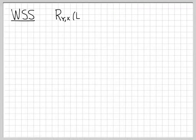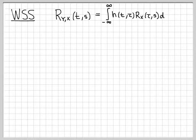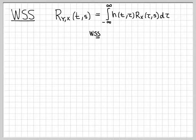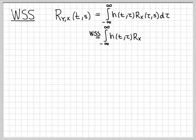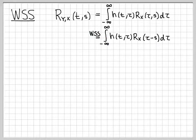For wide-sense stationary, here's what we had for the cross-correlation from the last video. We were able to write this general expression that the cross-correlation function between y and x at time t and s is equal to this integral expression. I can simplify this integral if I assume a wide-sense stationary input random process. That means this autocorrelation function, which for a general random process is two-dimensional, simplifies to being a one-dimensional time function. So I can rewrite that as r_x of tau minus s. This simplification is due to assuming a wide-sense stationary input random process.